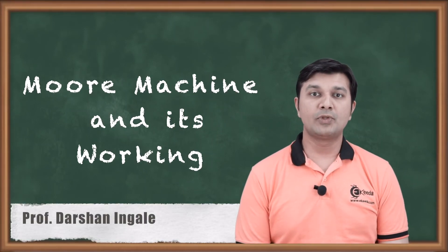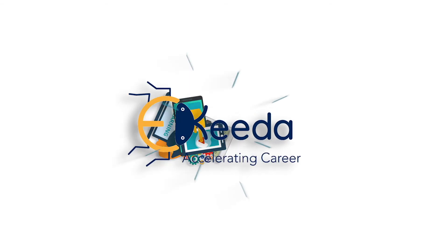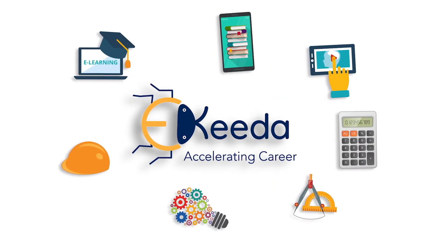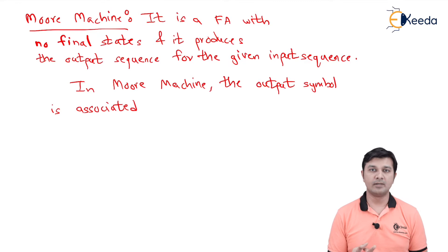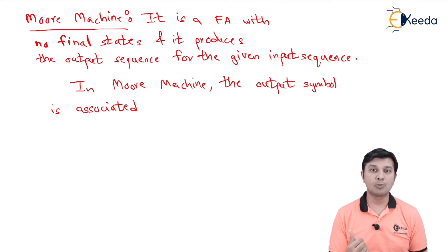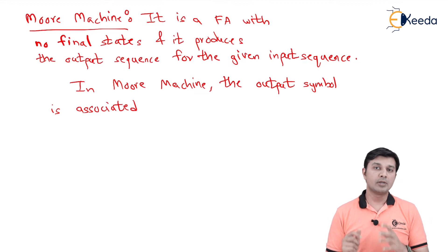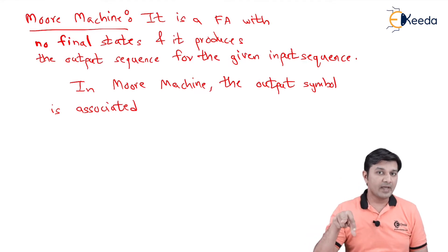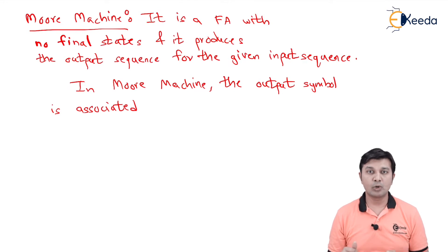We are going to start with a new topic: the Moore machine. If you remember the initial classification of finite automata, there are broadly two types. The first has final states but does not produce an output sequence. The second has no final states but produces an output sequence. The first type was further classified into DFA and NFA, which we covered previously. Now we are moving to the finite automata which produces outputs but has no final states.